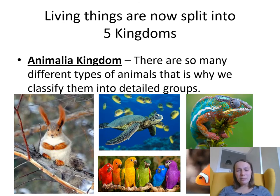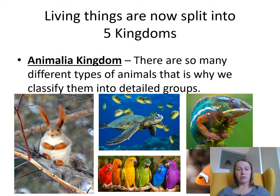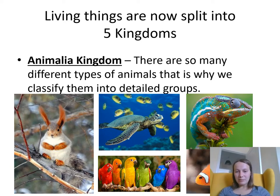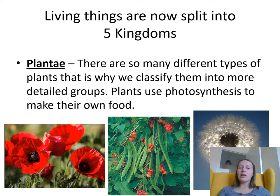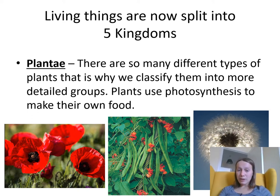The Animalia kingdom — can you guess what's in the Animalia kingdom? Animals! Within the animal kingdom, things are divided into different groups as well. You can see here we've got some mammals, some reptiles, some birds, some fish, and some amphibians. The Plantae kingdom — can you guess what's in that one? Plants! So many different kinds of plants that we divide those up into other detailed groups. Those plants use photosynthesis to make their own food, and I know you've been learning about that.